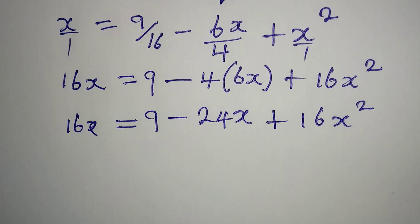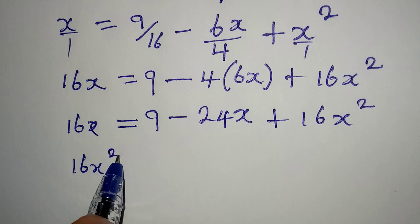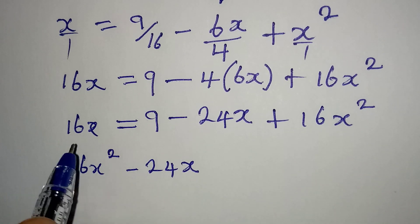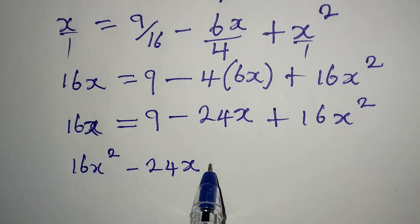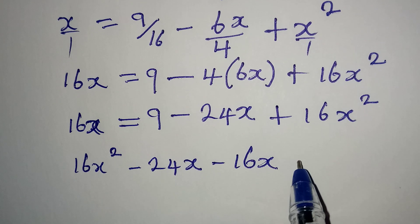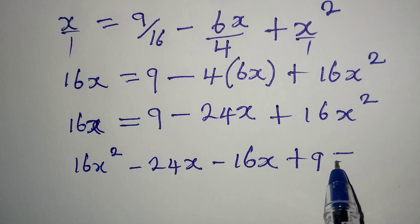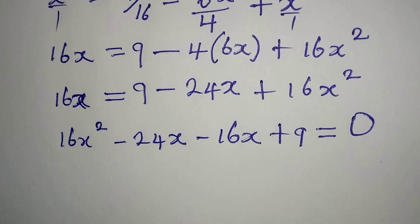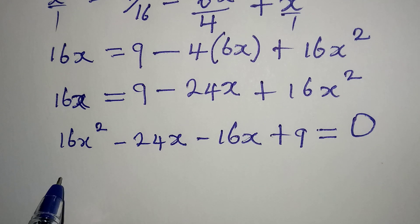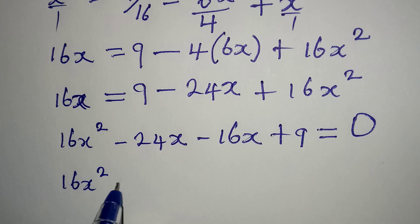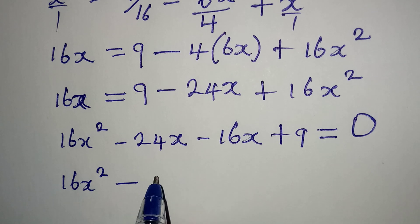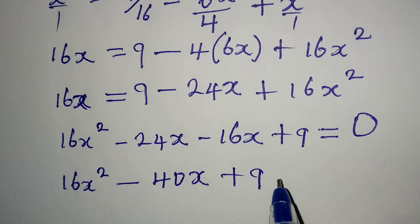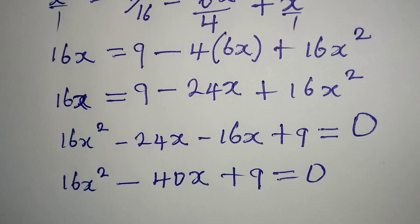Let's arrange this better. We have 16x squared first, then minus 24x, and this 16x moves to the left becoming minus 16x, then plus 9 equal to 0. Putting the x terms together: 16x squared minus 40x plus 9 equals 0.